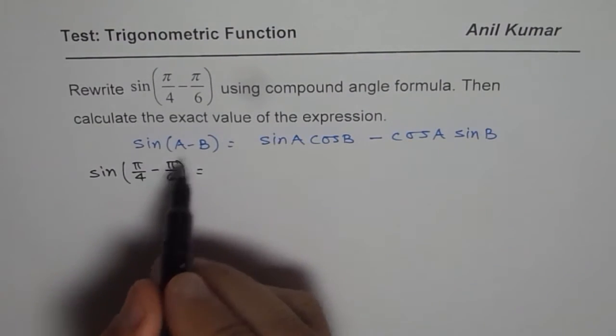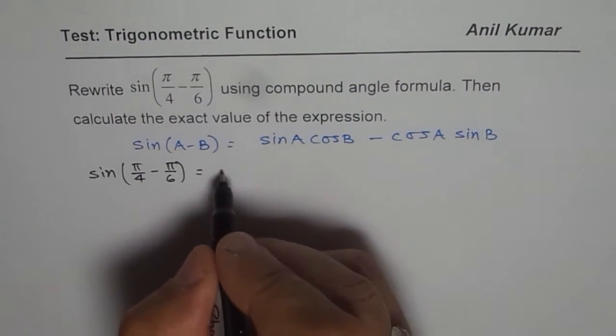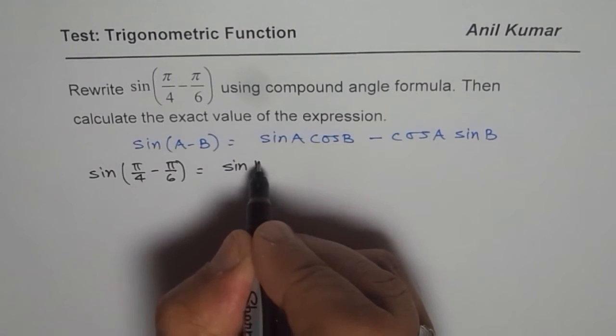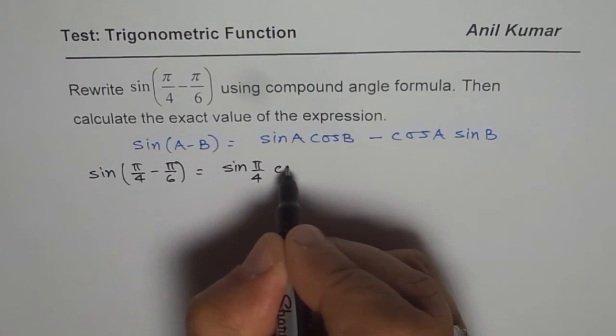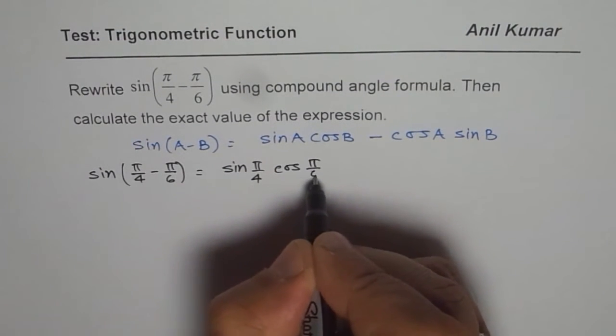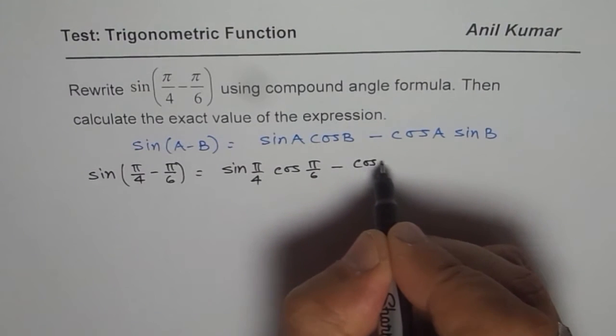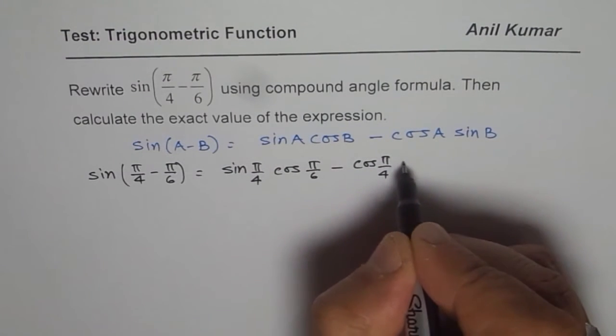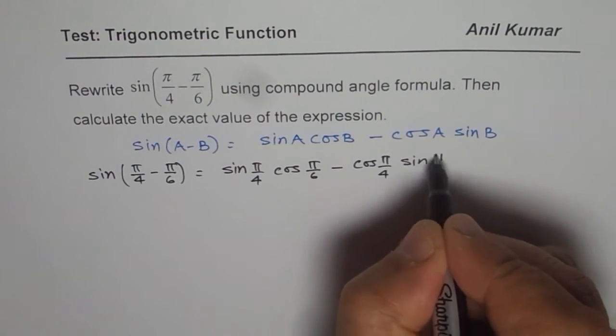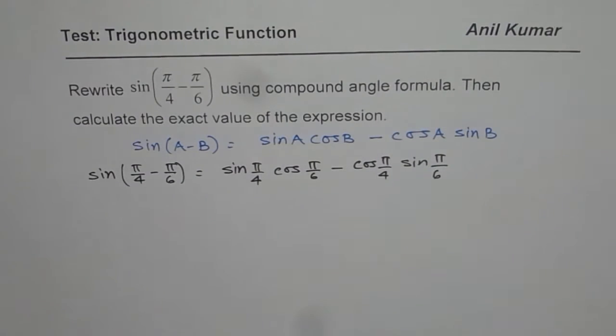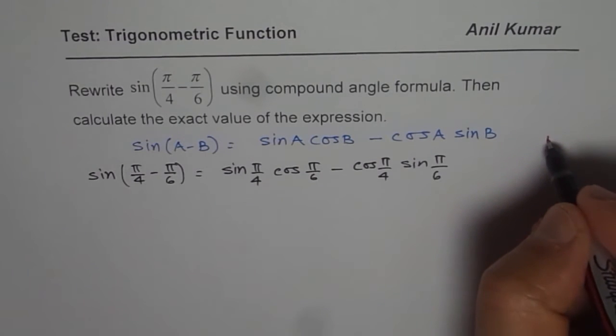Now A is π/4, B is π/6. So we could write this as sin(π/4) cos(π/6) minus cos(π/4) sin(π/6). Now these are special triangles, they have exact values, so let's draw these special triangles.